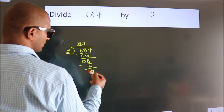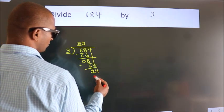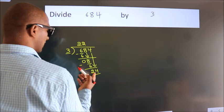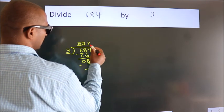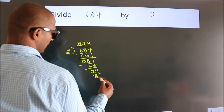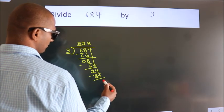After this, bring down the beside number, so 4 down, so 24. When do we get 24? In 3 table, 3 8s, 24. Now, we subtract, we get 0.